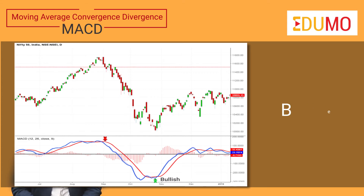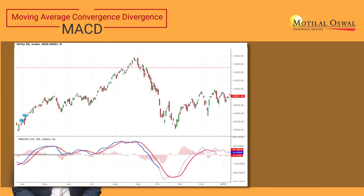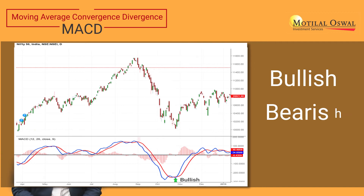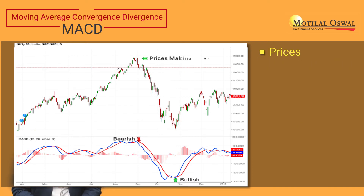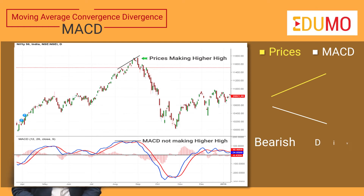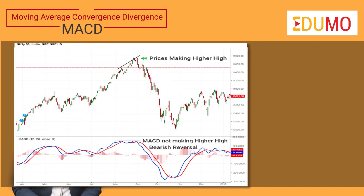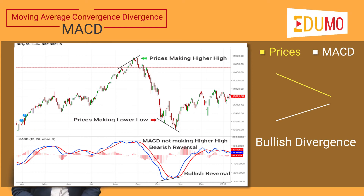Next is the divergence. MACD also helps in identifying bullish and bearish reversals through divergences. Divergence can be bullish or bearish. When the price makes higher highs whereas the MACD is making lower highs, then there is a bearish divergence and a bearish reversal may take place. However, when the prices make lower lows and the MACD is making higher lows, then there is a bullish divergence and a bullish reversal may take place, as shown in the chart here.